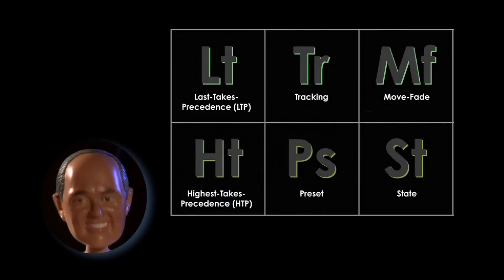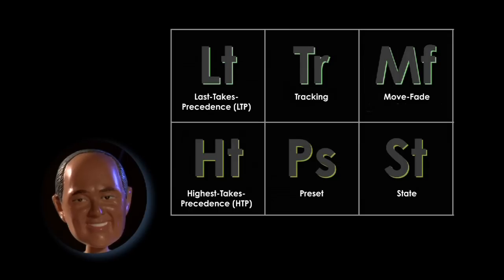The concepts HTP, LTP, tracking, preset, move, fade, and state are not new ideas. They've actually been around in theater lighting for a very long time and are still used in our modern lighting consoles. But let's take a look at how these concepts got their start.